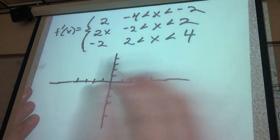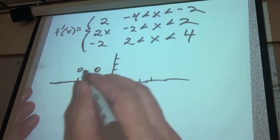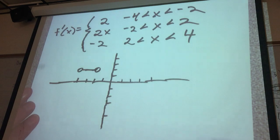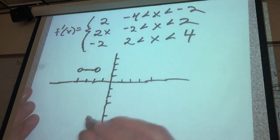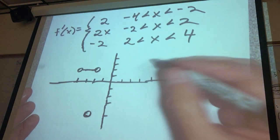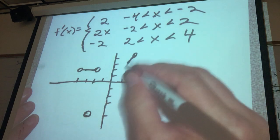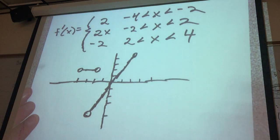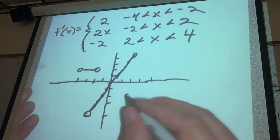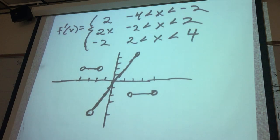Between negative 4 and negative 2, the derivative sits up at 2. Considering 2x: plugging in negative 2 gives negative 4, so that segment ends there — not exactly to scale, but you get the idea. Then from 2 to 4, the derivative continues similarly with another jump.